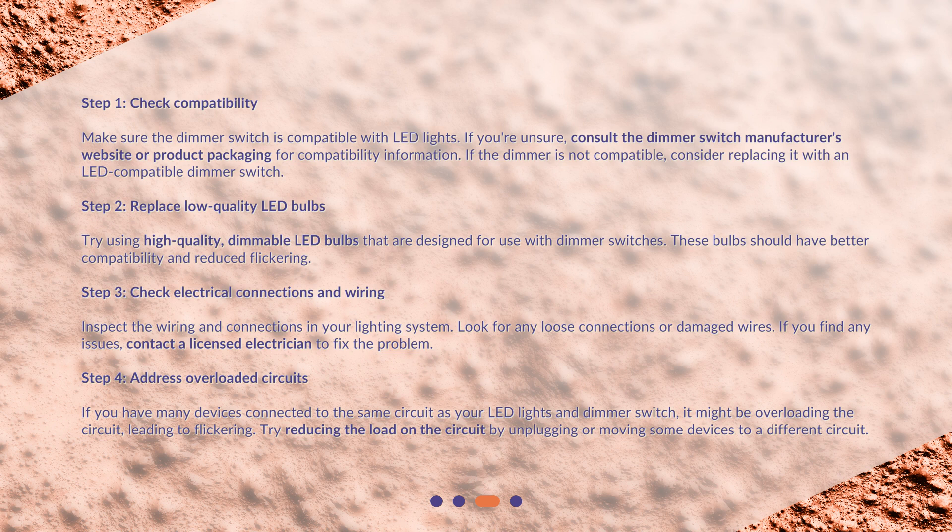Step 3: Check electrical connections and wiring. Inspect the wiring and connections in your lighting system. Look for any loose connections or damaged wires. If you find any issues, contact a licensed electrician to fix the problem.